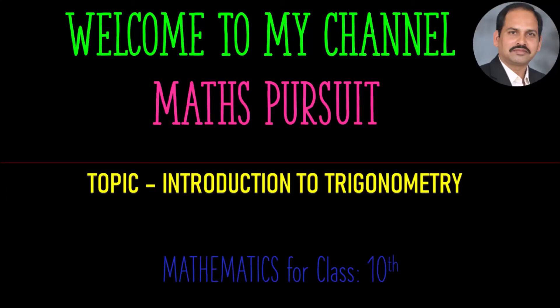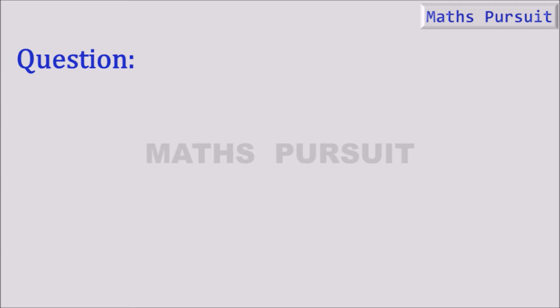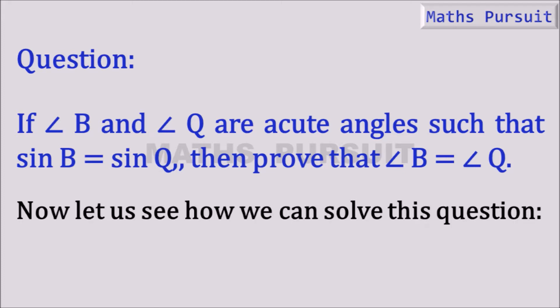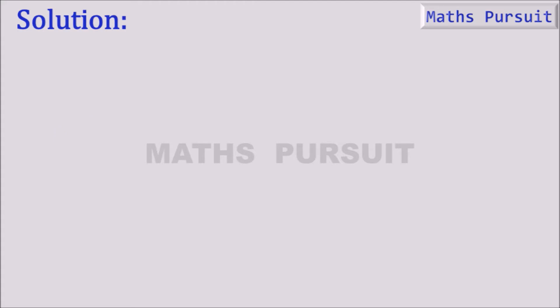Hello friends, welcome to my channel Maths Pursuit. Today in this topic of introduction to trigonometry, let's see what is given in the question. Moving on to the question: it is given that if angle B and angle Q are acute angles such that sine B is equal to sine Q, then prove that angle B is equal to angle Q.